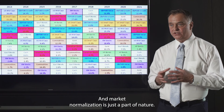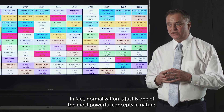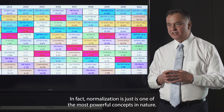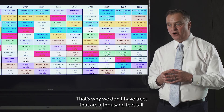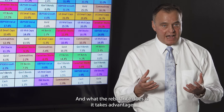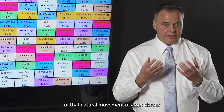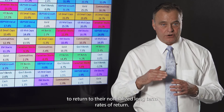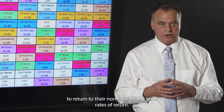Market normalization is just a part of nature. In fact, normalization is one of the most powerful concepts in nature — that's why we don't have trees that are 1,000 feet tall. Everything normalizes over time. What the rebalance does is take advantage of that natural movement of asset classes returning to their normalized long-term rates of return.